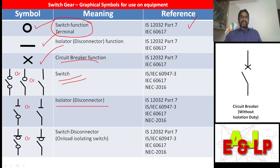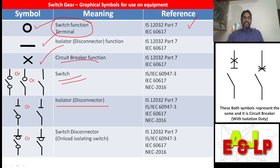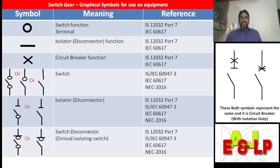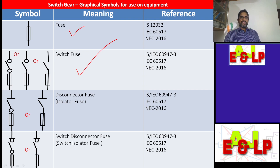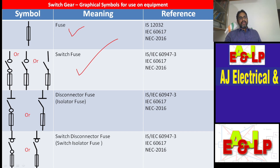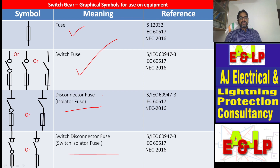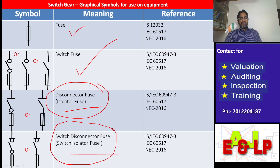Then isolator or disconnector — here you can see the symbols. Next is switch disconnector, where switch and disconnector are combined. And please see the references there. Next is simply a fuse, and then comes switch fuse — combinations of fuse with switch, isolator, or switch disconnector. Three symbols of switch fuse are shown: disconnector fuse or isolator fuse, and switch disconnector fuse.